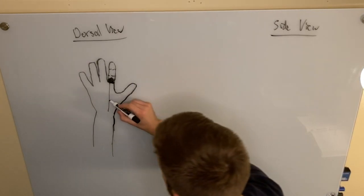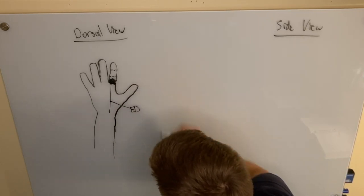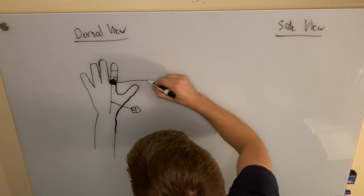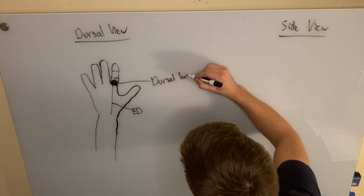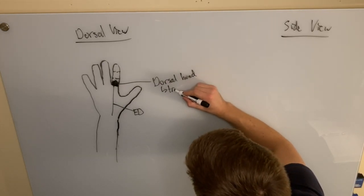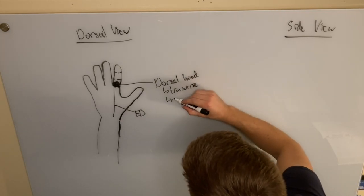So let's label this. This is extensor digitorum. This is the dorsal hood, which has transverse fibers and oblique fibers.